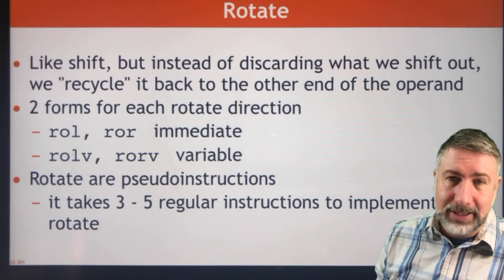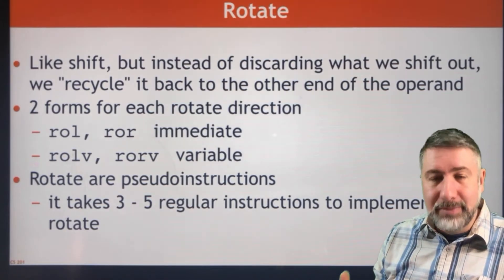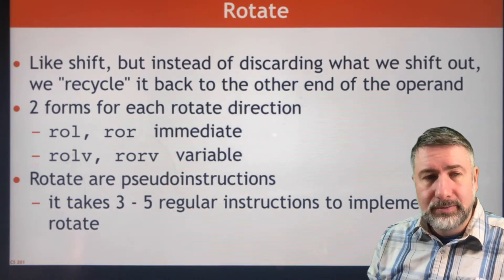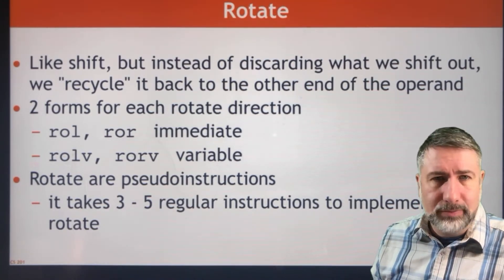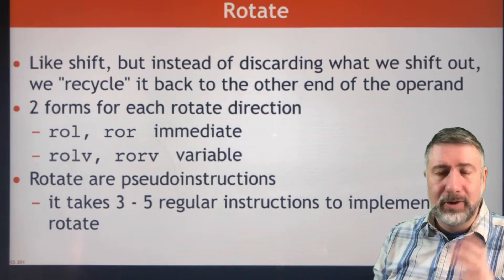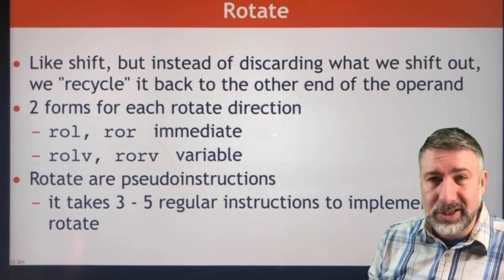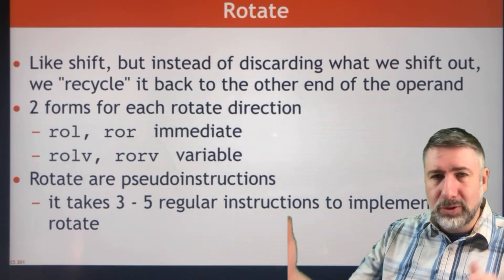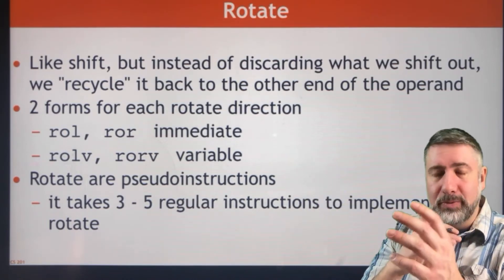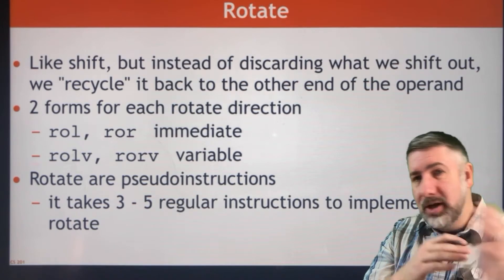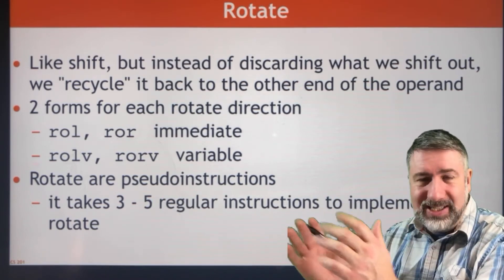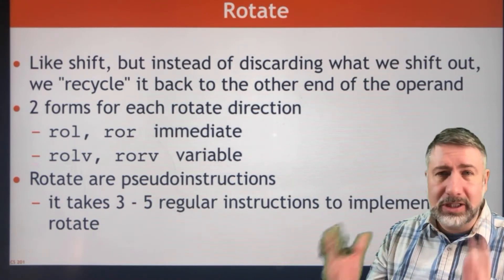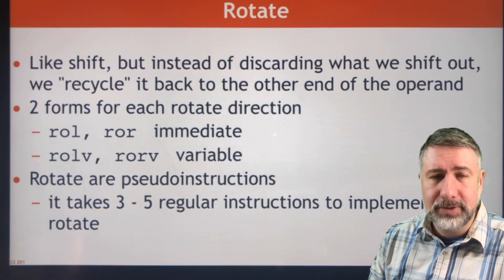We can rotate left or right by an immediate amount stored in the shift value, or we can rotate right and left by a variable amount. There is no arithmetic rotate, because if we were to rotate into the position where there's a sign bit we would wipe out that sign bit anyway. There's no such thing as an arithmetic rotate — it's strictly a logical operation.